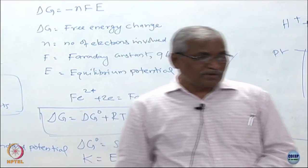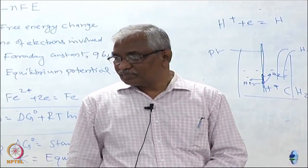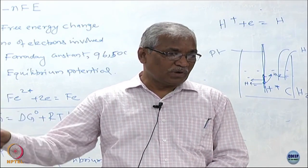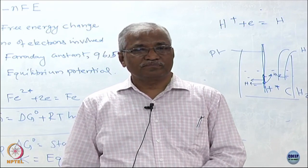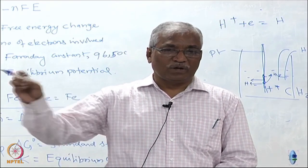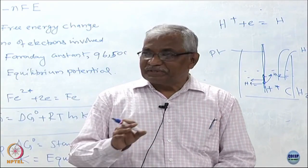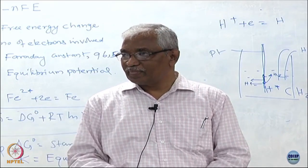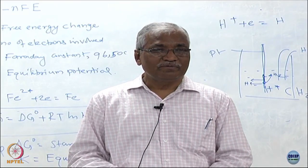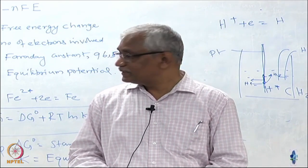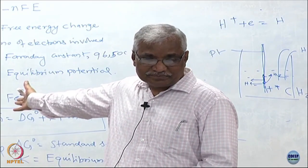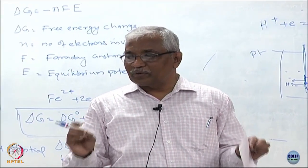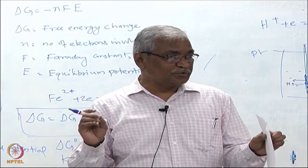How do I determine the equilibrium potential for various systems? Say I take copper and dip it in copper sulfate solution of 1 molar concentration, and then in 0.1 molar concentration — will the potential shown be the same or different? It will be different. The basis for this is the Nernst equation. So use the Nernst equation to determine the equilibrium potential for any electrochemical system.